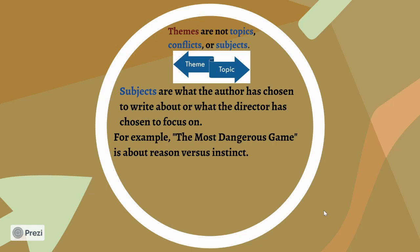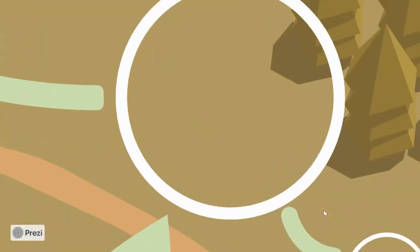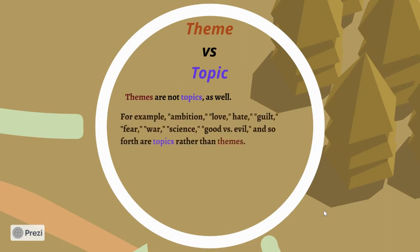That's the key issue that people get stuck on. And if you go to sites like Cliff Notes, Shmoop, and others, they don't really define themes well because they're just trying to get you a quick resource. Even if you said something like 'The Most Dangerous Game reveals the effects of war' — that's still a topic, not a theme. A theme is a complete idea. Things like ambition, love, hate, guilt, fear, war, science, good versus evil — those are all topics. They are not themes. Themes are always complete ideas.